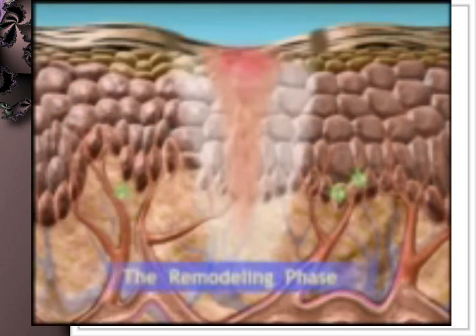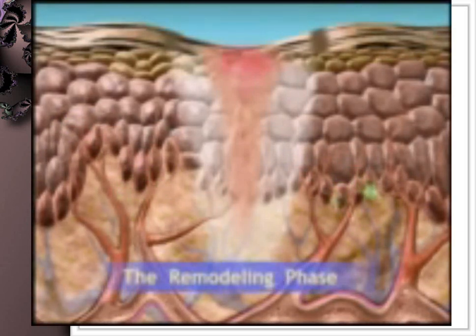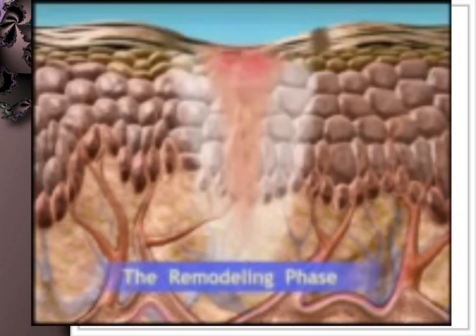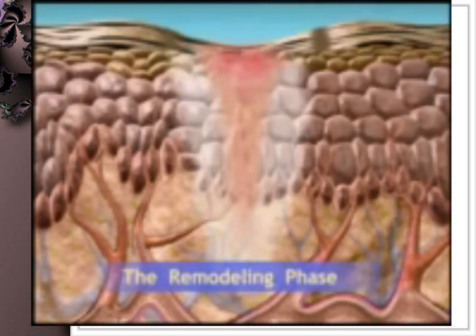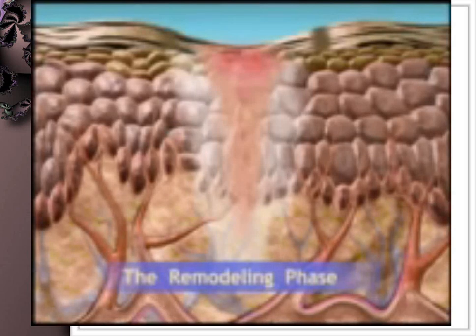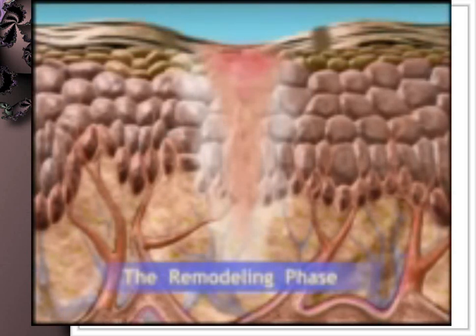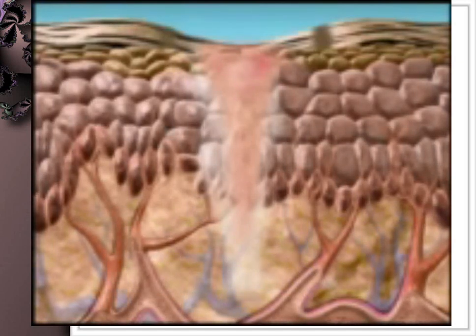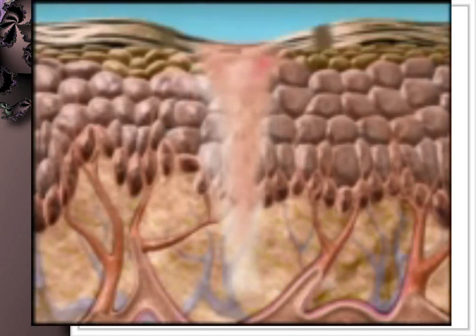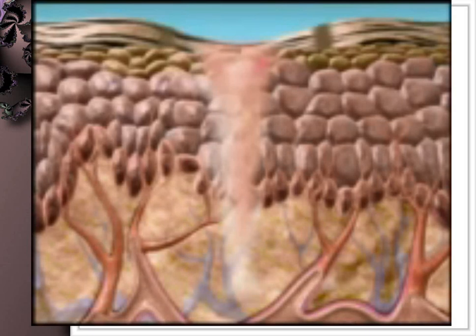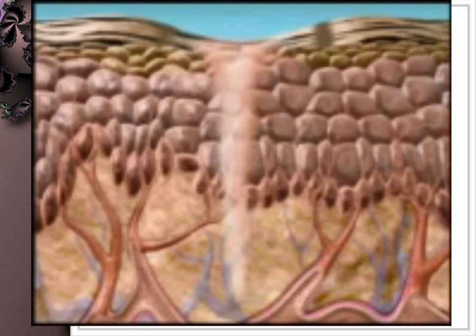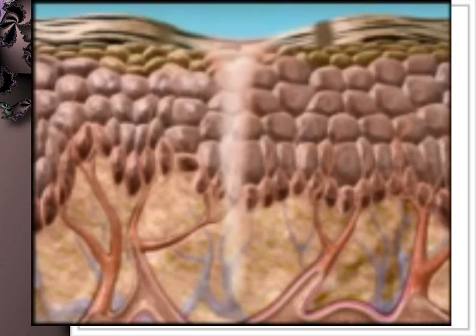The third phase of wound healing is the remodeling phase. It begins after about three weeks and can continue for six months or longer. During this stage, final scar tissue is formed by simultaneous synthesis and lysis of collagen. Clinically the scar becomes avascular, and scar tissue may achieve 70 to 80 percent of tensile strength by the end of three months.